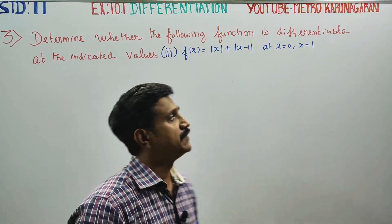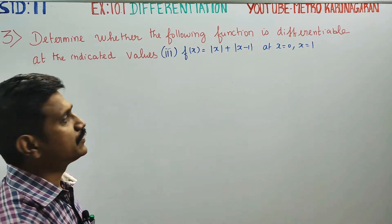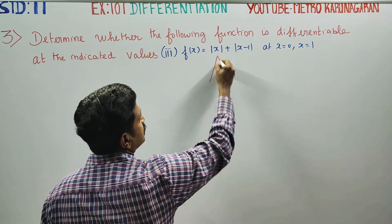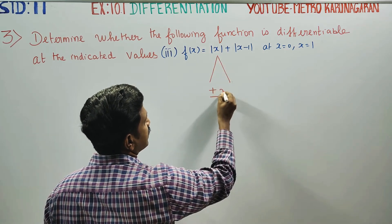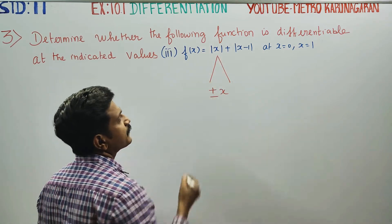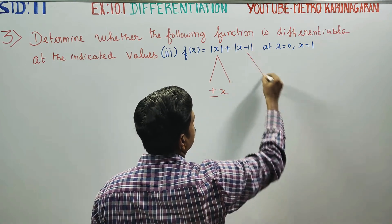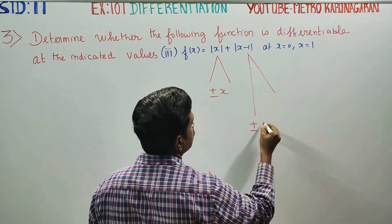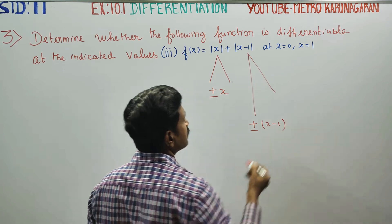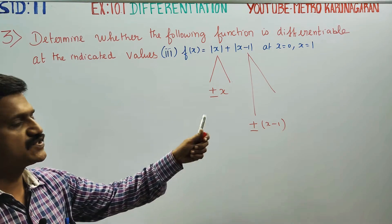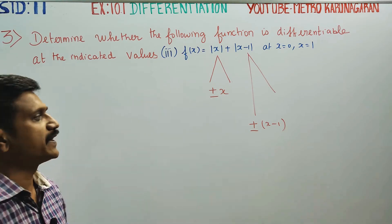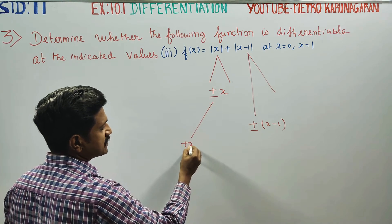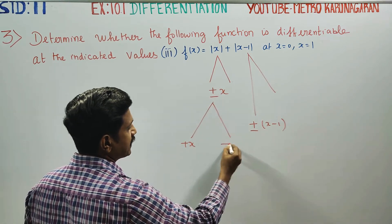Before entering into the sum, the function is redefined. The function involves two divisions: plus or minus x, and plus or minus x minus 1.